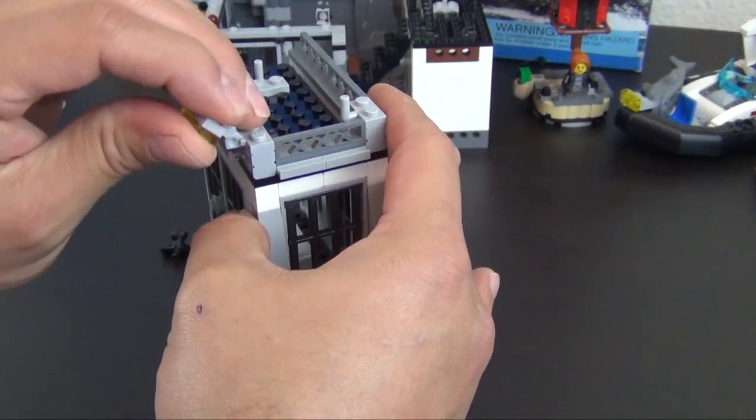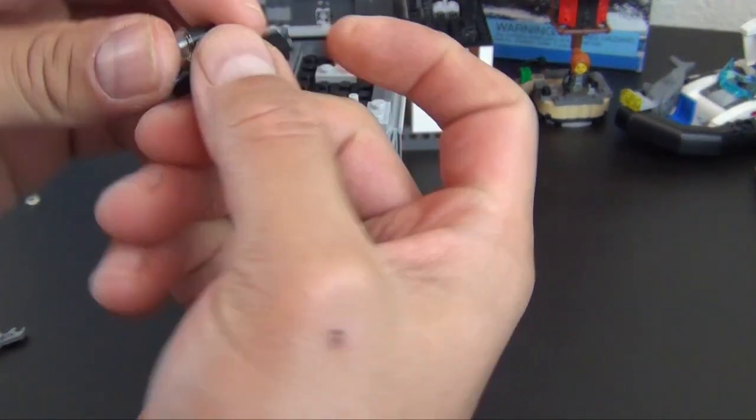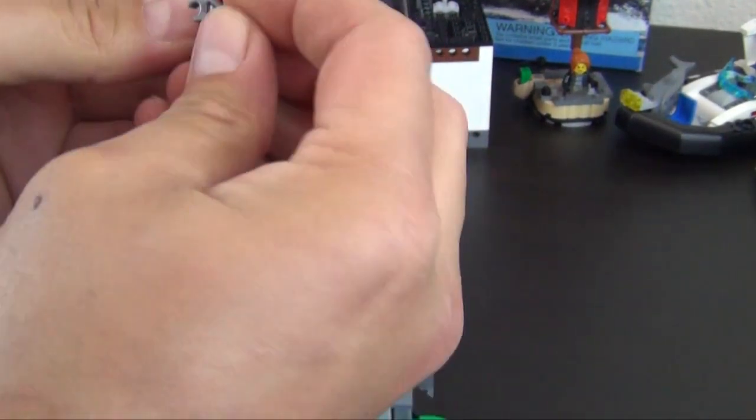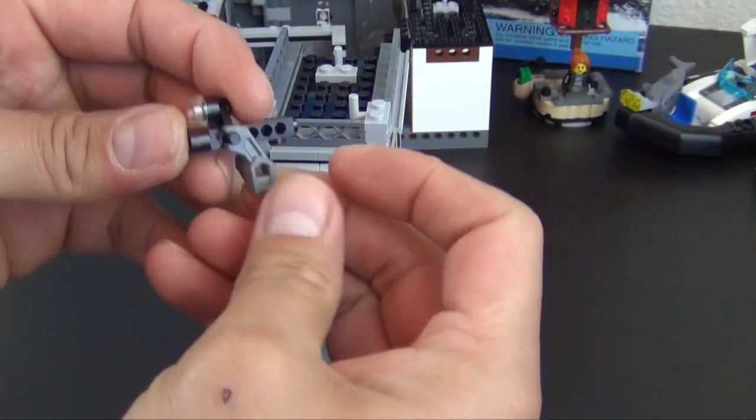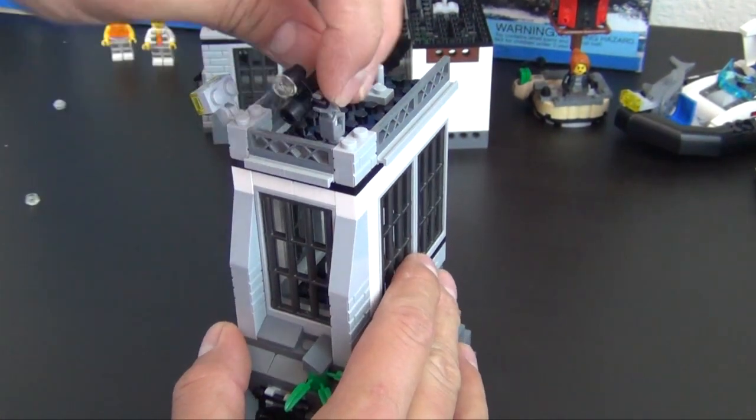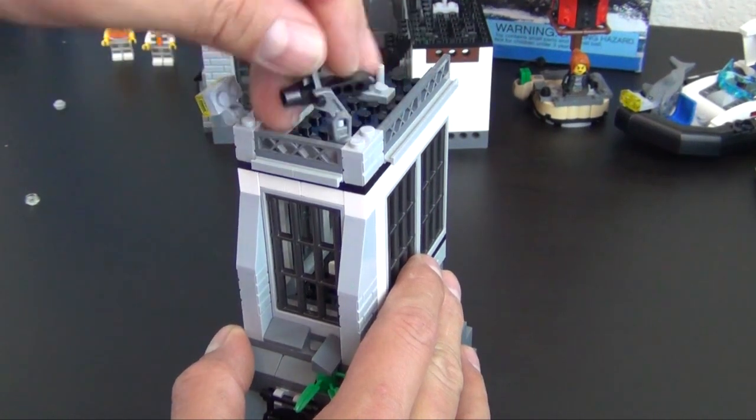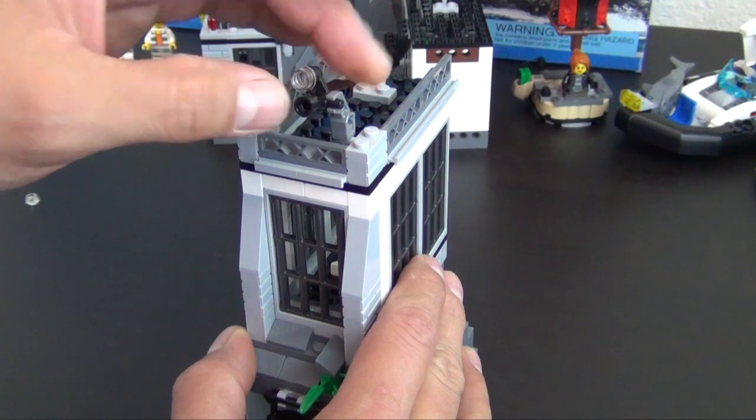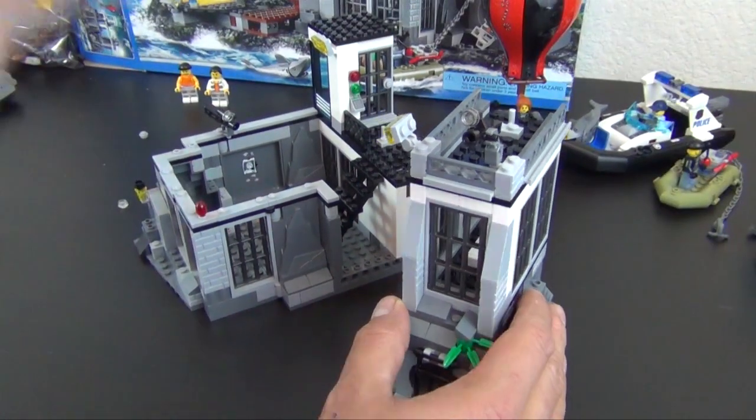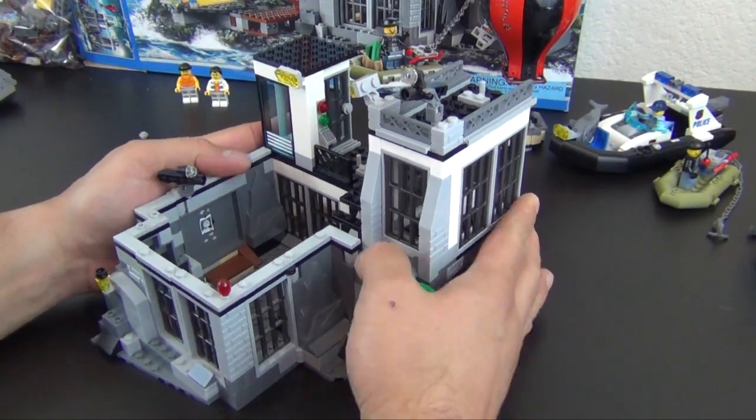All right, we have another light over here, and we have a security camera. It has one of these bionicle claws attached to it. You can see it moves pretty well. It rotates all the way around and rotates up and down. So this will now attach to the side of this part of the prison. There we go.